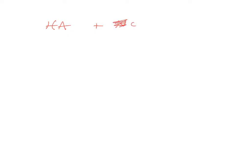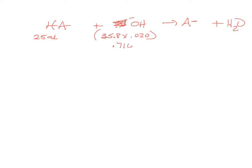We have 25 milliliters of the weak acid and 35.8 milliliters of base at 0.020 molar. The millimoles of base is 0.716 millimoles. The problem tells you you're at the equivalence point — the moles of base added equals the moles of acid we started with.